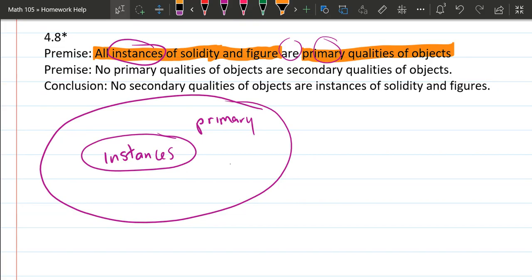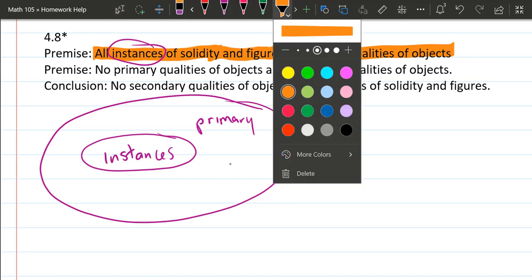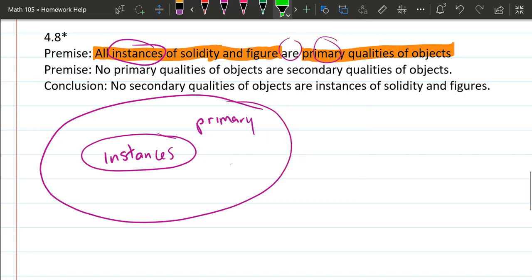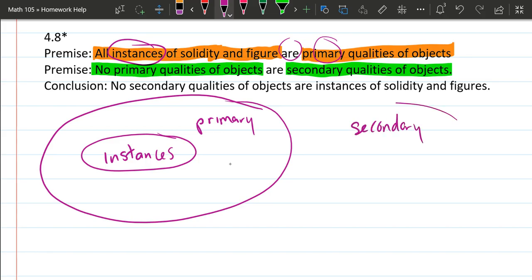And our second premise, it says no primary qualities of objects are. So let's go ahead and use the same. Well, let me change the color of the highlighter. So this is actually quite the opposite. It says none or no primary are secondary. So if you have a primary quality, none of them are secondary qualities. So secondary qualities are disjoint or completely separate from primary.